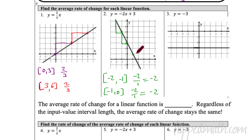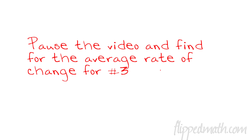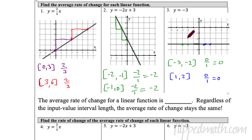Do number three by yourself — it's a little tricky but also easy. Pause the video. How did you do? I got a slope of zero for both intervals. The average rate of change is zero, which makes sense because this line is flat — it's going straight across and does not change.